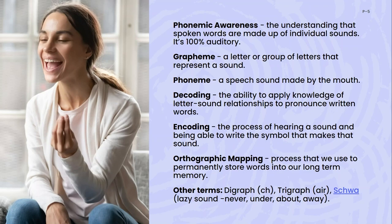Other terms you might hear include a digraph — two letters coming together to make one sound — and a trigraph, which is three letters making one sound. The schwa sound is often called the lazy sound: that 'uh' you hear in words like 'never,' 'under,' 'about,' and 'away.' It can occur at the start, middle, or end of words. I've hyperlinked the word 'schwa' in the blog where all this content and resources are available, including a great video with a song to help students understand the schwa sound.